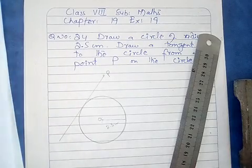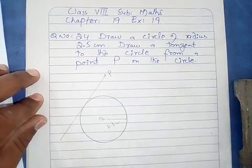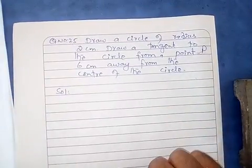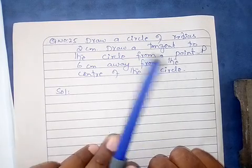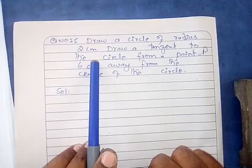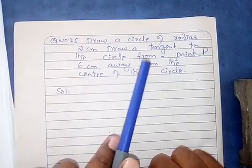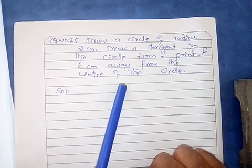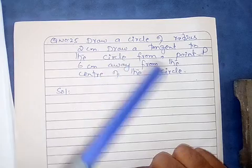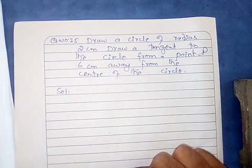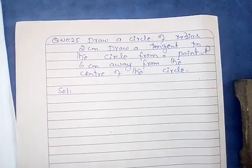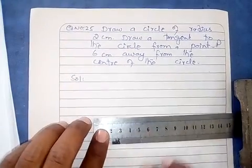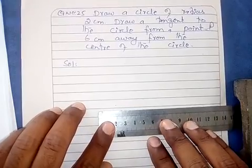یہ question یہی تک تھا۔ اس کا اگلا question number 25 بھی ہے، وہ بھی solve کرتے ہیں۔ Question number 25 کہہ رہا ہے: draw a circle of radius 2 cm، پھر draw a tangent to the circle from a point P 6 cm away from the center of the circle۔ سب سے پہلے آپ 2 cm کا ایک circle بنائیں۔